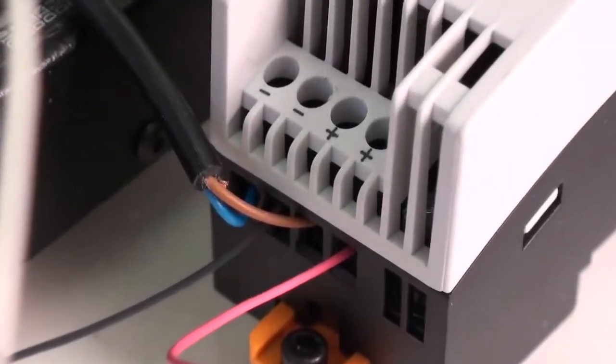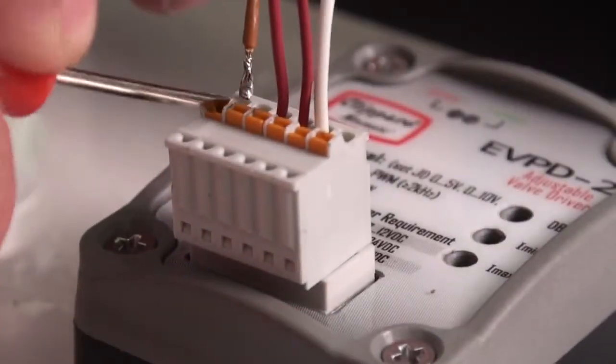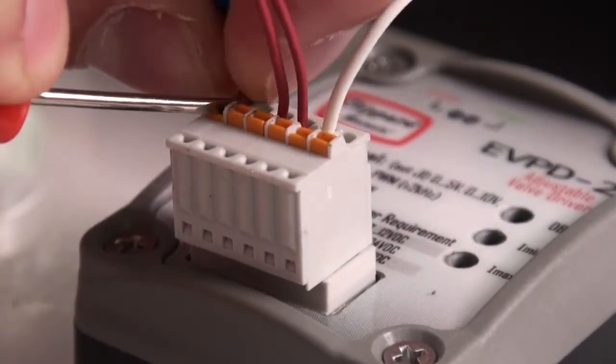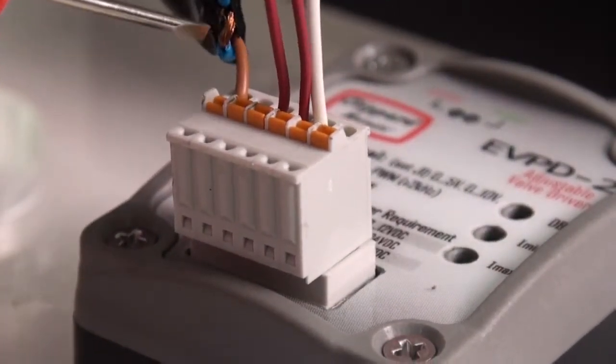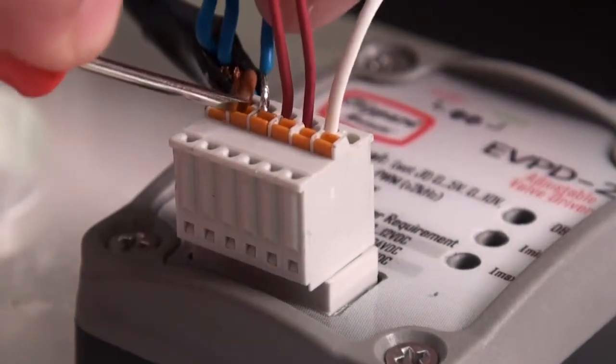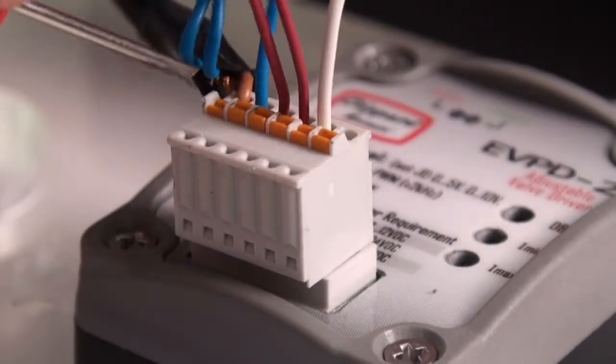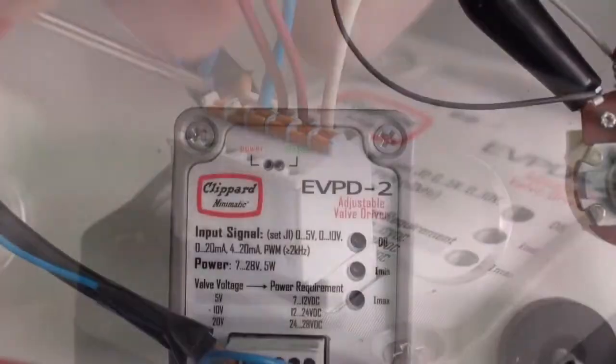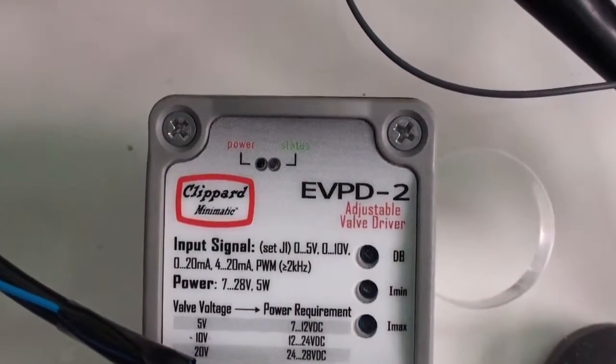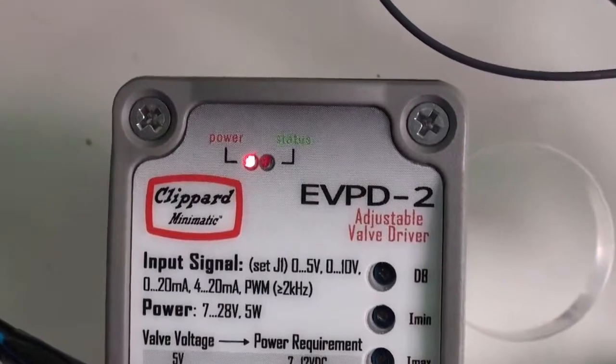Next, we will connect the power supply to the driver. The high side of the power supply is connected to the far left terminal, and the low side of the power supply is connected to the terminal immediately to its right. The driver will not be harmed in the event that you hook the power supply up backwards, but it also won't function until the connection is done properly, at which time the red power LED should be lit.